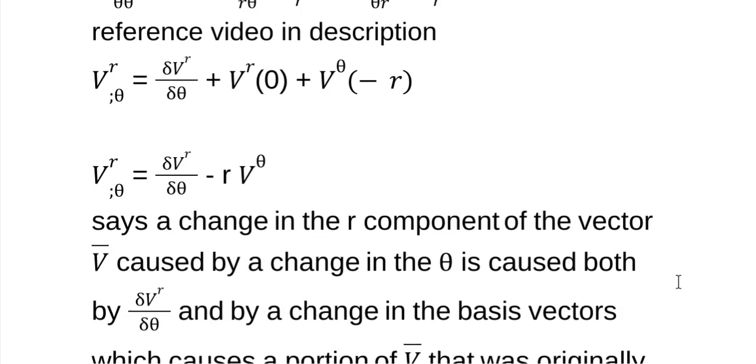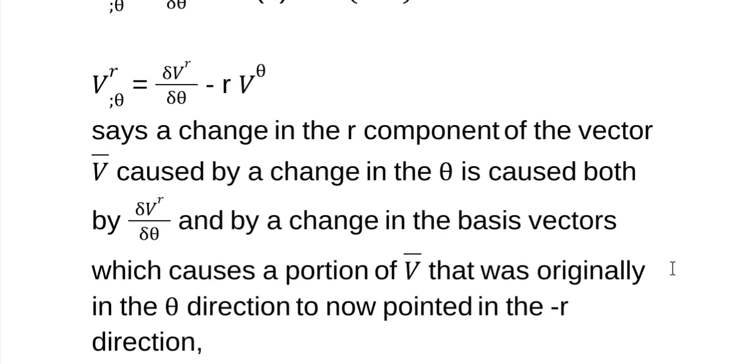Now here's what it says. I've read this like 20 times. I've rewritten it over. There's no other way to write it. It's so wacky. It says a change in the R component of the vector V caused by a change in theta. So we're varying the theta and seeing what effect that has on R is caused both by the normal thing you expect, the derivative of V R with respect to theta, and a change in the basis vectors which causes a portion of that vector that was originally in the theta direction to now point in the minus R direction.